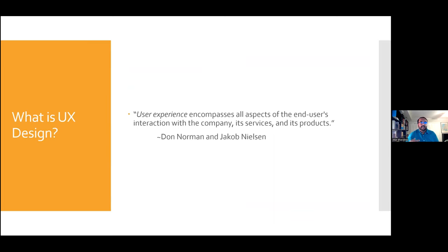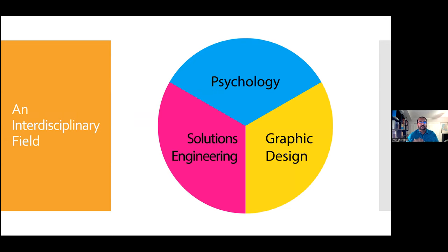So what is UX design? Here's a definition I like to give. It's from Don Norman and Jacob Nielsen, some of the pioneers of the field. User experience encompasses all aspects of the end user's interaction with the company, its services and its products. That means it is an interdisciplinary field. Typically, the graphic design portion gets over-prioritized, but really it's more than that. There's a psychological component where you have to understand your users, and there's also a solutions engineering and testing part. User experience design is exactly what it sounds like — you are designing an experience for a specific set of users. Typically that is set in the world of software, but it varies considerably, all the way to game design.